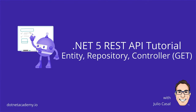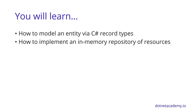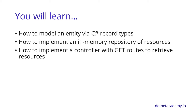In the second part of the .NET 5 REST API tutorial, we introduced the foundations of our API — including the core entity used to represent items in our catalog, the repository class responsible for all items storage operations, and the controller that will handle all requests sent to the REST API. You will learn how to model an entity via C# record types, how to implement an in-memory repository, and how to implement a controller with a GET route.